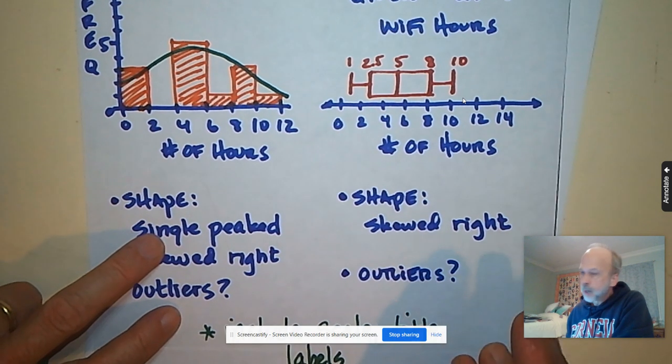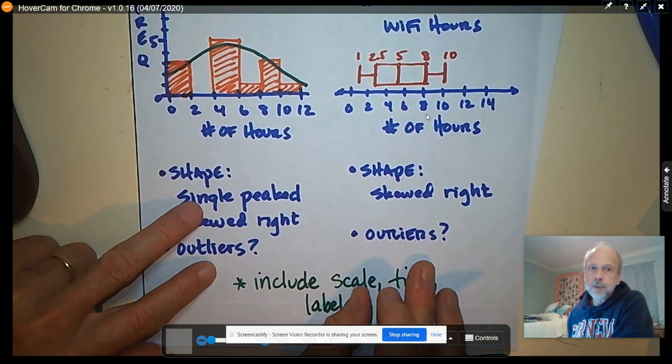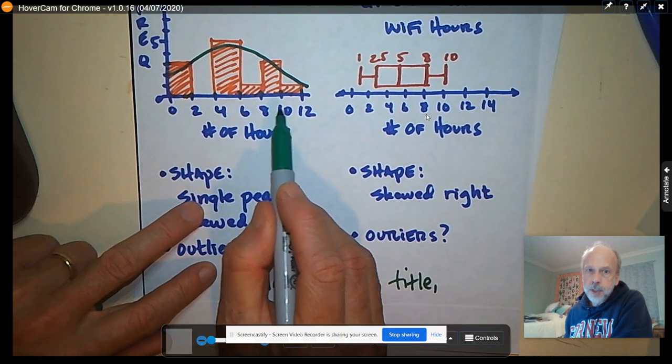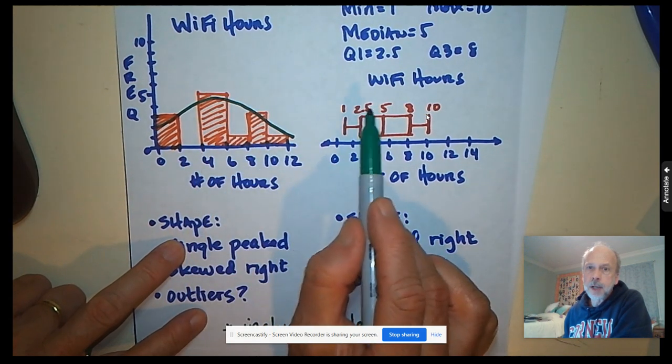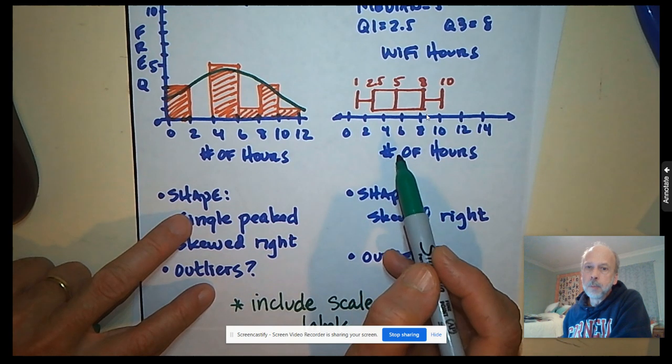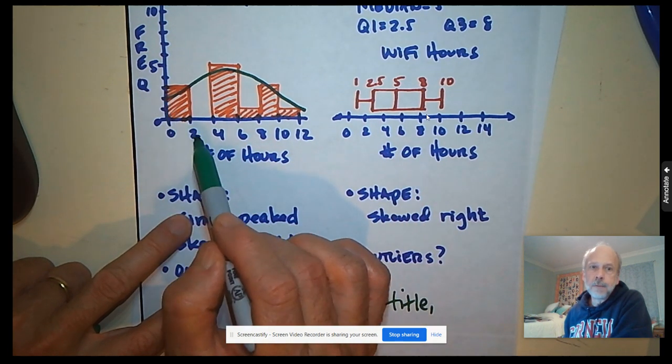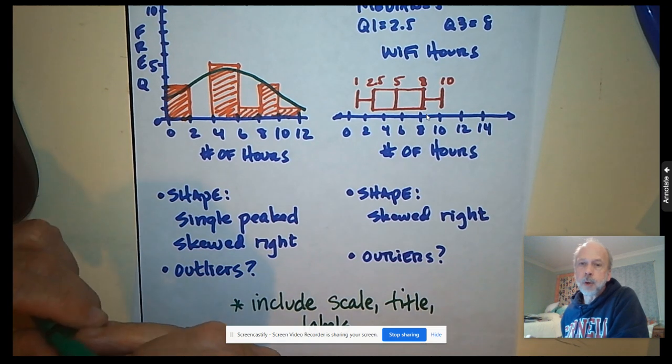No matter which choice of graph you make, please make sure to include the following things. There has to be a scale that makes sense. There has to be some kind of title so people know what your graph is about. And there must be labels on the axes so people understand what those numbers represent.